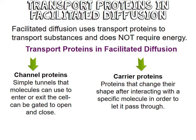There are two kinds of transport proteins in facilitated diffusion. We have channel proteins, which are simply tunnels that molecules can enter and exit — they can be gated to open and close. And then we have carrier proteins, which are proteins that change their shape as they interact with a particular molecule, allowing them to pass through.